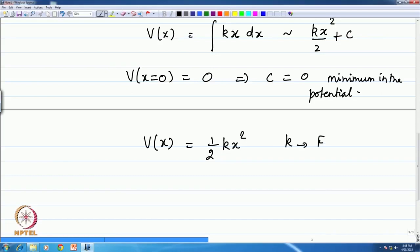And k you know is the force constant or the spring constant if you are talking about springs. The dimension of k: k x square is energy, so it is very clear what k should be. And the Hamiltonian if you have to write for the harmonic oscillator is obviously the kinetic energy plus the potential energy of the harmonic oscillator.